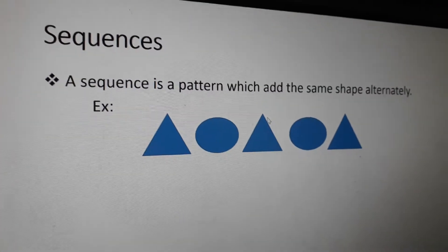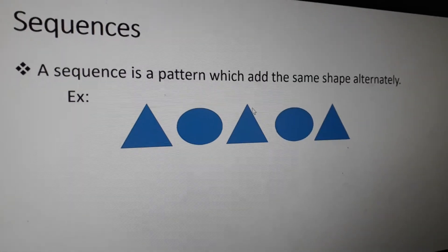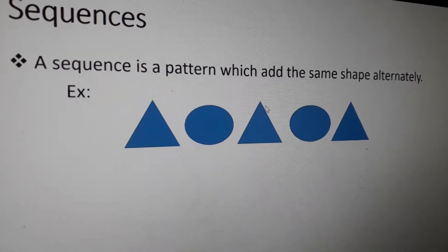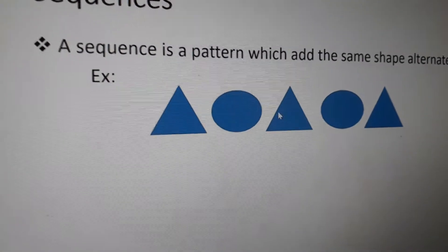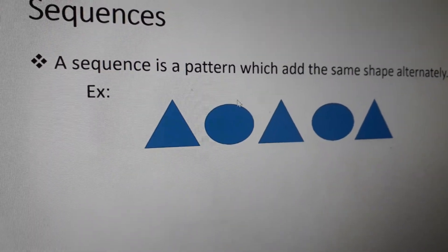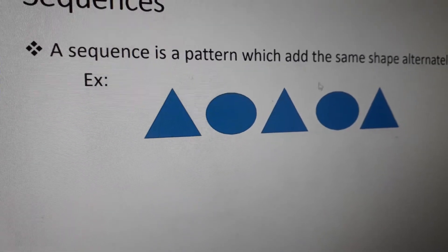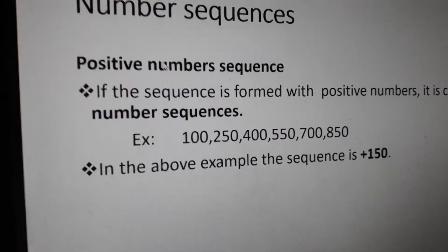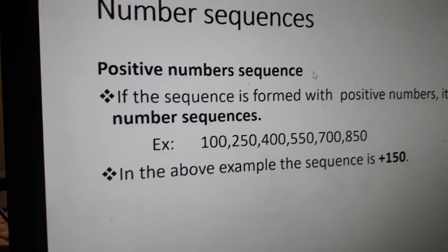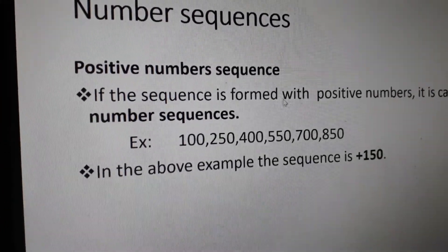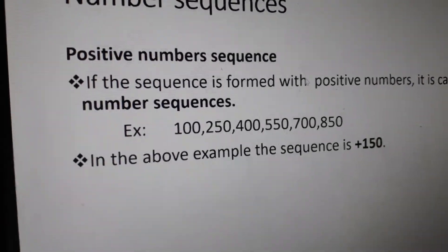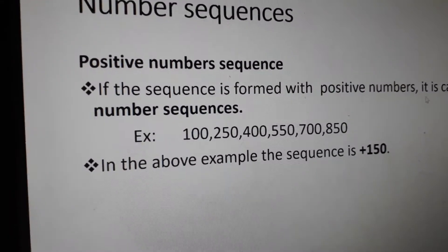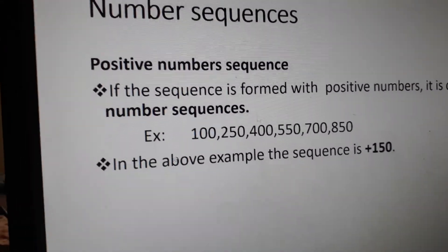Sequencer. A sequence is a pattern with other terms alternatively. Example. Number sequences. Quantity number sequence. If the number is formed with a positive number, it is called a positive number sequence.